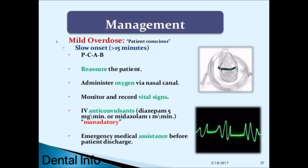Mild overdose, patient conscious, slow onset greater than 15 minutes: follow PCAB, reassure the patient, administer oxygen via nasal cannula, monitor and record vital signs, administer anticonvulsants—diazepam 5 mg/min or midazolam 1 mg/min (mandatory)—and ensure emergency medical assistance before patient discharge.